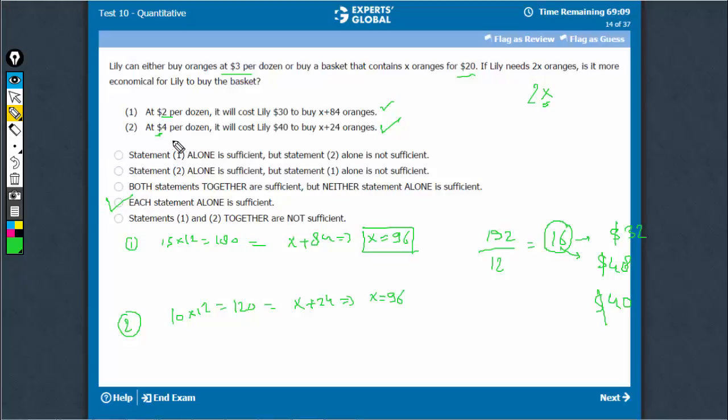Don't worry about this $4 value, because this is a hypothetical value. The question says that she can either buy at $3. This is a hypothetical value that if she got oranges at $4, she would get these many for $40. But practically, this is a price. And once again, I would repeat that you don't actually have to find these numbers. You just have to understand that once you know the value of X, all of this can be calculated. Practically, you don't have to calculate.